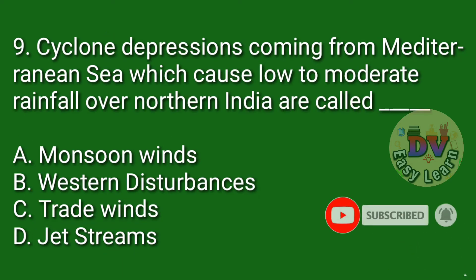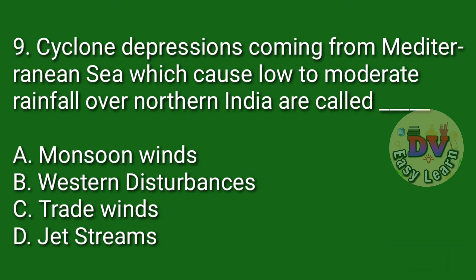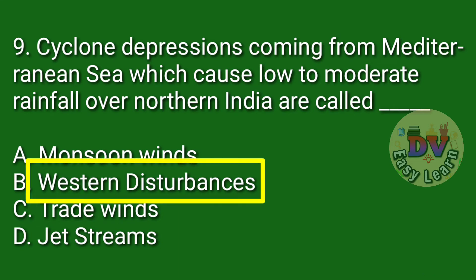Question number 9. Cyclone depressions coming from the Mediterranean Sea which cause low to moderate rainfall over northern India are called — Correct answer: Western disturbances.